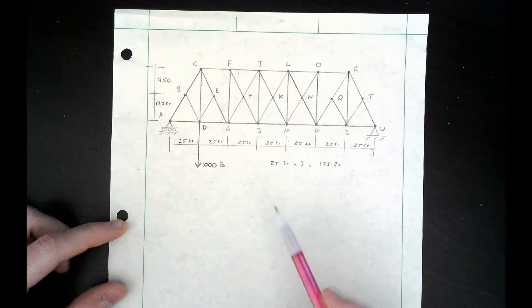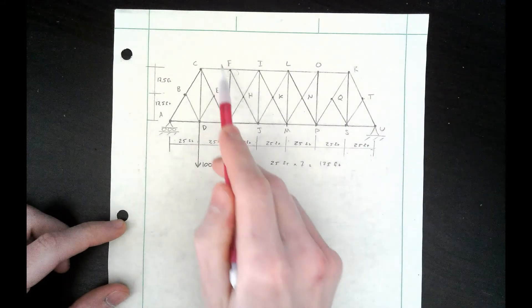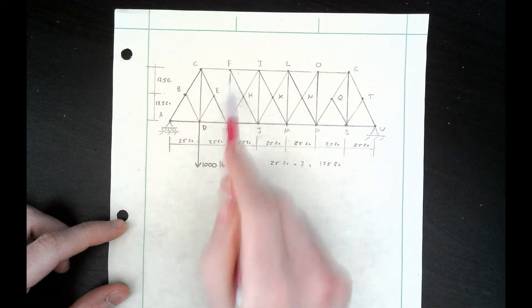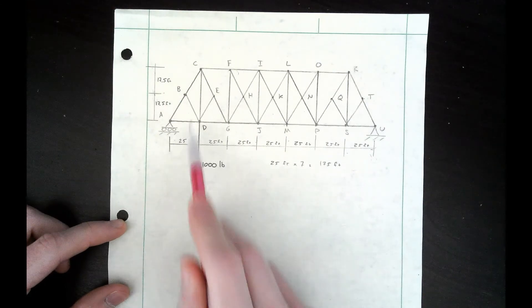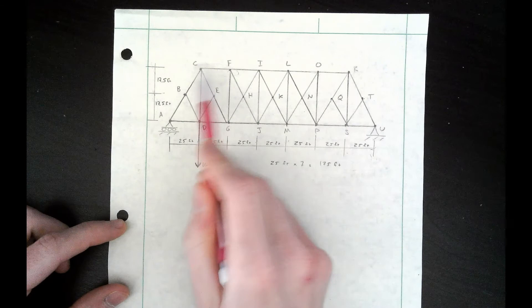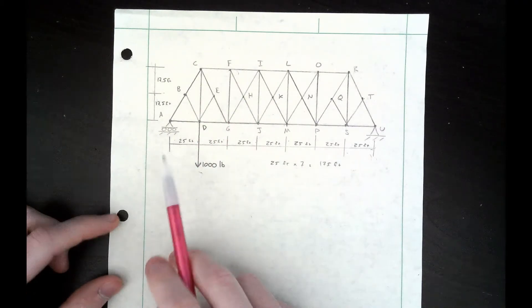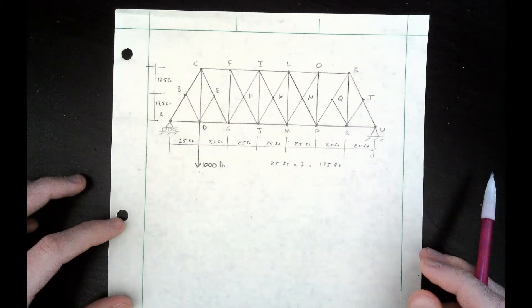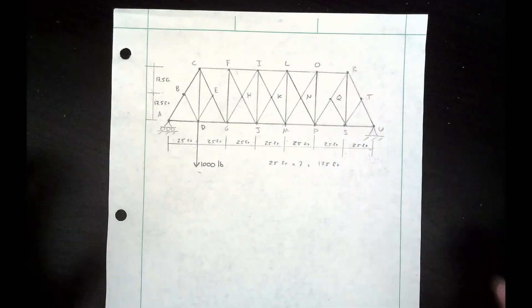Our task is to find the force in member CF given a thousand pound downward force at D. We want to find the magnitude of this force as well as whether it's in tension or compression, so we can determine how the member is going to be loaded.